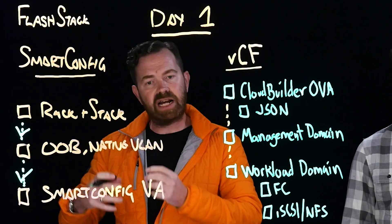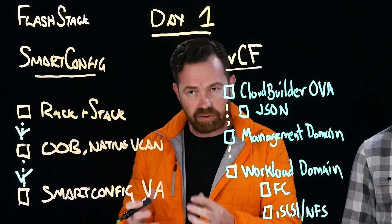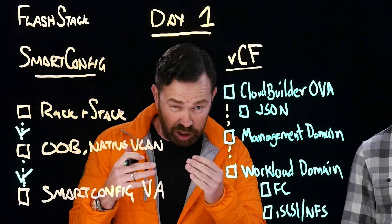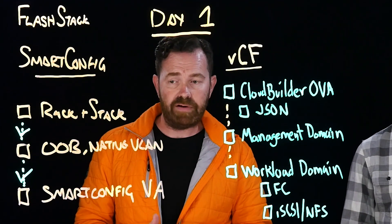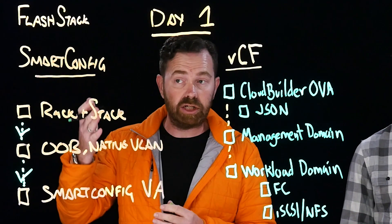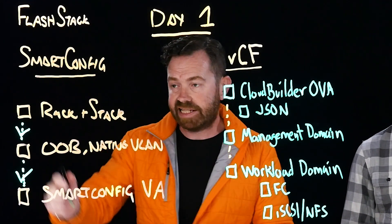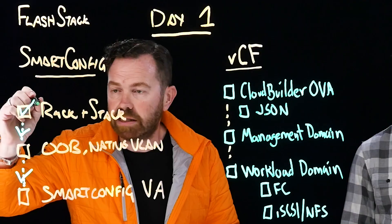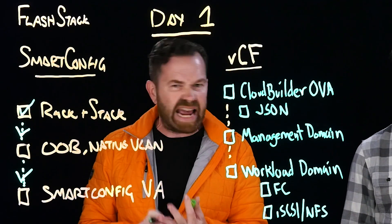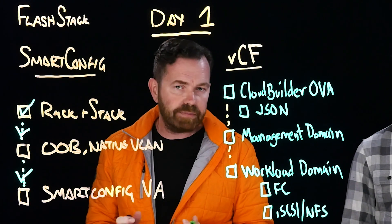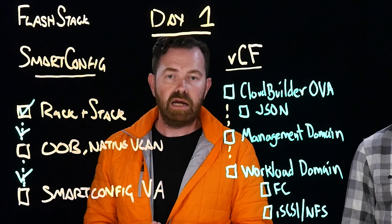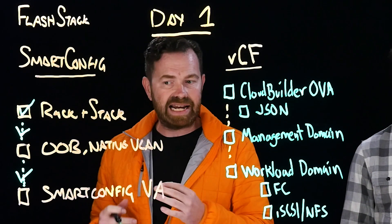So day zero, we've done our design and we've architected how the solution looks. Then we're in day one and we're actually going through the deployment process of FlashStack. The first phase of that deployment is to use Smart Config. Step one is really around doing the racking and stacking — we rack our Nexus switches, our MDS fiber switches, then we do our UCS and then our FlashArray, having all that connected up and ready to go.